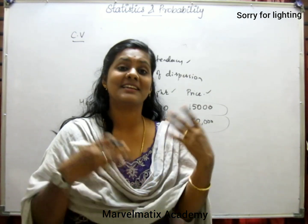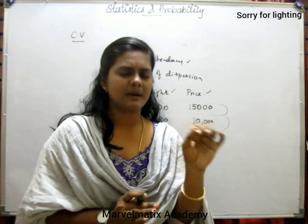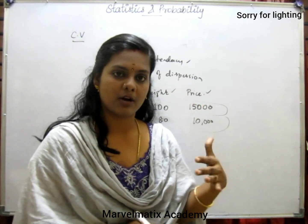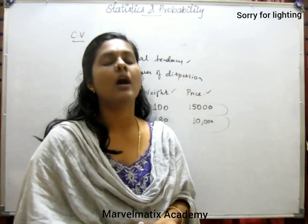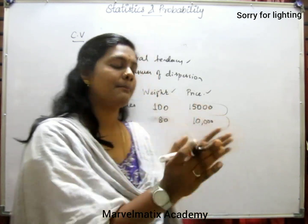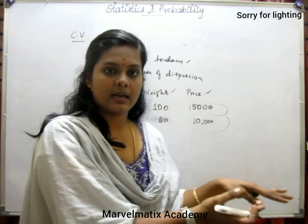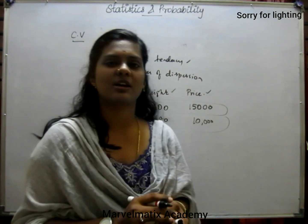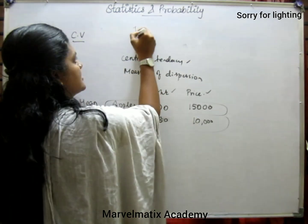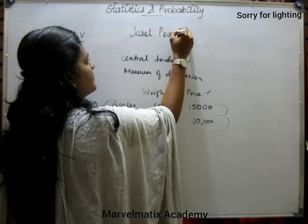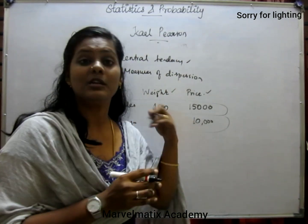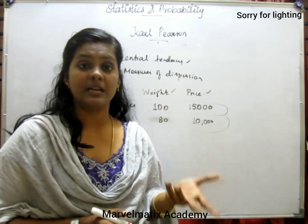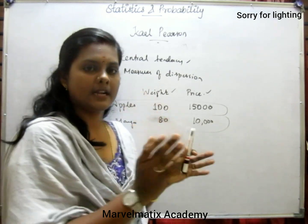We will talk about the units and how we compare them. We will talk about the central tendency and measures of dispersion. This is the coefficient of variation. This is the name of the person called Karl Pearson. So that is the statistical decision — the formula is related to two or three datasets, one coefficient of variation.